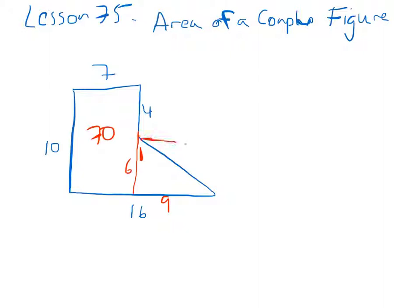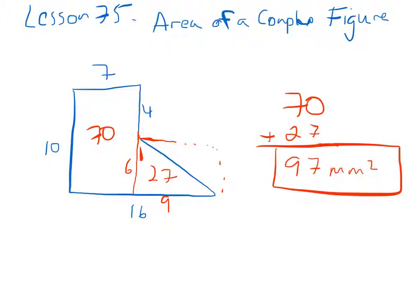So now to figure out the area of the triangle, we pretend that it's a rectangle. 6 times 9 will be 54. And then half of 54 is going to be 27. So I can write 27 in here. So now I've got 70 plus 27. 0 plus 7 is 7. 7 plus 2 is 9. They said dimensions are in millimeters. So I just need to add a label to my answer here. And it's 97 square millimeters is my answer for example 1.